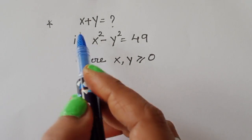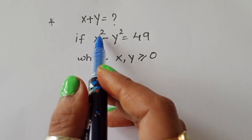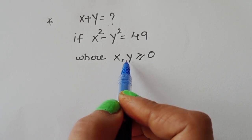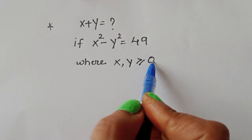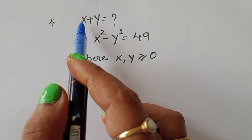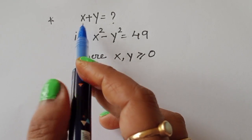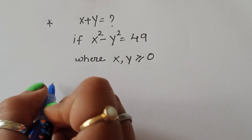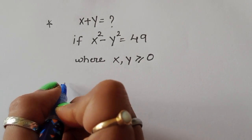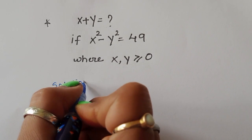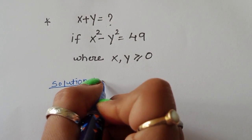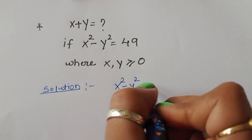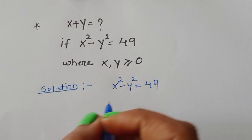The question is: given x² - y² = 49, where the condition is x and y are greater than or equal to 0, we have to find the value of x and y, and at the same time what is the value of x + y. Let's see how we can find the value of x + y. x² - y² = 49 is given.